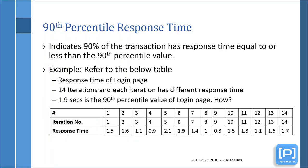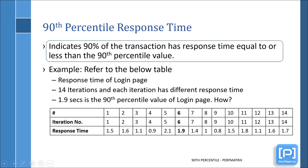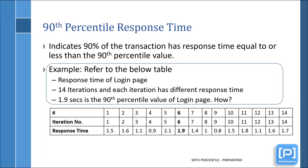Among 90th, 95th, and 99th percentile, 90th percentile response time is the most common. Let's try to understand it through an example. Look at the table — it has the response time of a web page along with the iteration number. This data is of 14 iterations, with different response time values in each iteration. If we refer to the result generated by a performance testing tool, 1.9 seconds will be the 90th percentile response time of the page.